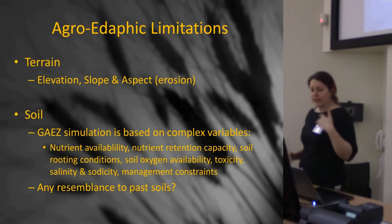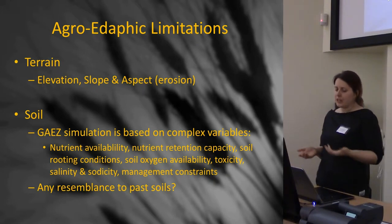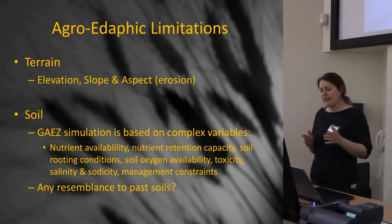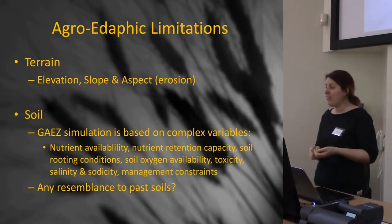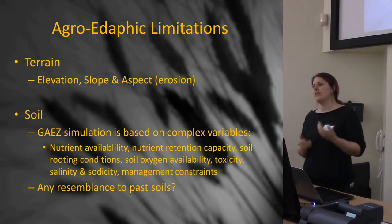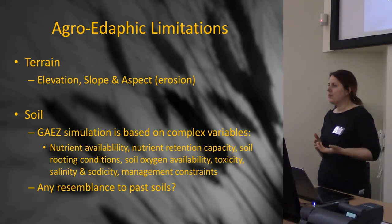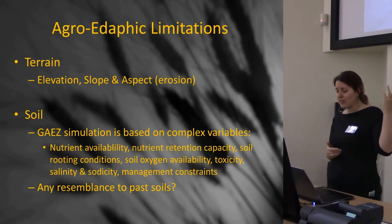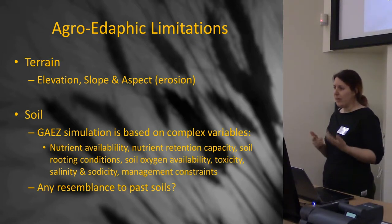Then I went on to looking at the rest of the model — things like agro-edaphic limitations. Things like terrain are fairly standard; we're all used to looking at elevation, slope, and aspect. The problem falls down a bit when you look at soils, because the GAEZ simulation is based on very complex variables — it takes account of oxygen, rooting conditions, toxicity — all these kinds of things. In some cases soils can be fairly stable, but in others it's utterly not — particularly in karstic landscapes where soils are going to change very rapidly in terms of exploitation.